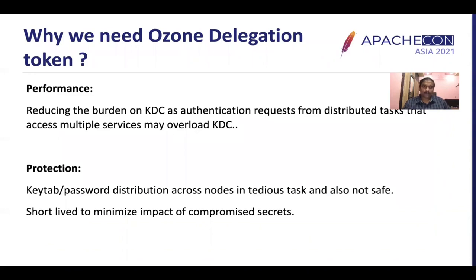Why do we need Ozone delegation tokens? One main reason is performance — to reduce the burden on the KDC. If there are distributed tasks that need to authenticate to multiple servers, it puts a lot of pressure on the KDC, so delegation tokens reduce that burden. Importantly, to acquire delegation tokens, you must first authenticate to the service via Kerberos, and then use those tokens for subsequent access. Another reason is protection: distributing KEYTAB or passwords across nodes is tedious and unsafe. Delegation tokens are short-lived, minimizing the impact of compromised secrets, and can be cancelled or renewed as needed.